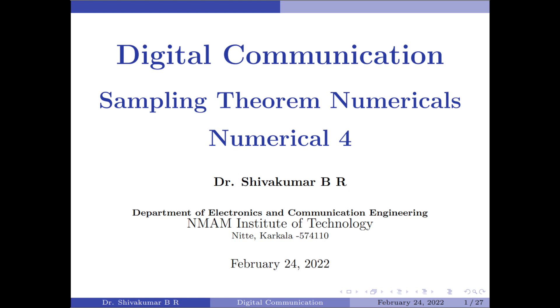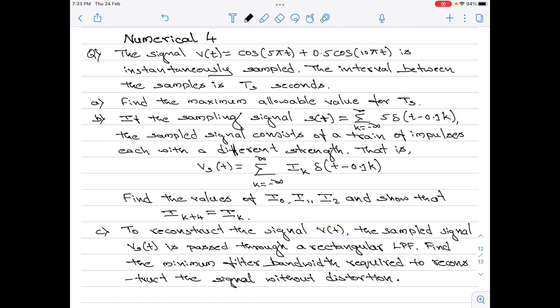Hello everyone, welcome to Digital Communication Tutorials. In this video I'm going to take up the fourth numerical on the sampling theorem. The signal v(t) = cos(5πt) + 0.5·cos(10πt) is instantaneously sampled, and the interval between samples is Ts seconds.